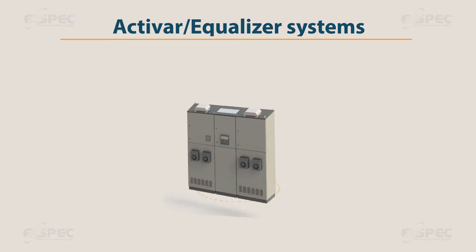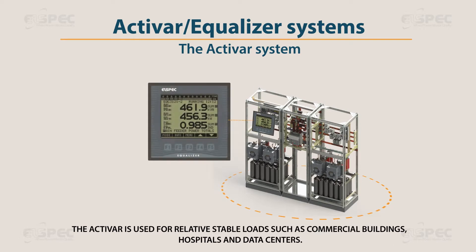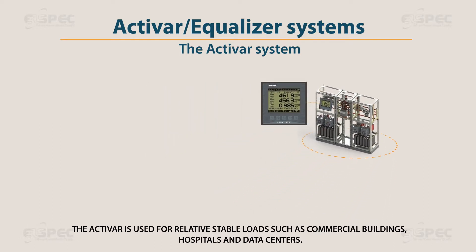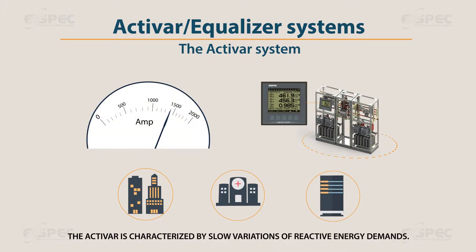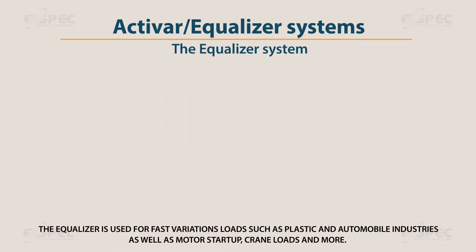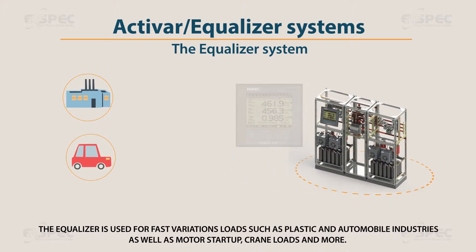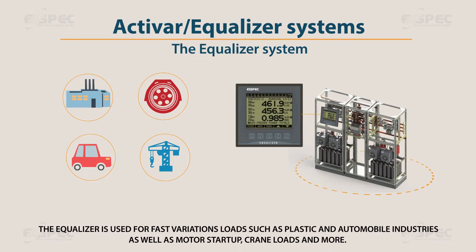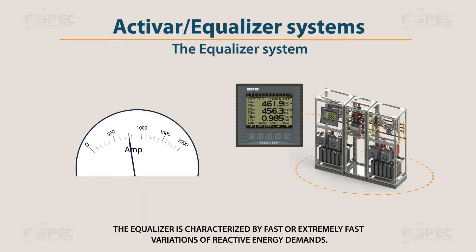The solution offered by L-Spec is the ACTIVAR equalizer systems based on thyristor-switched capacitors. The ACTIVAR is used for relatively stable loads such as commercial buildings, hospitals, and data centers, characterized by slow variations of reactive energy demands. The equalizer is used for fast variation loads such as plastic and automobile industries, as well as motor startup, cranes, and more, characterized by fast or extremely fast variations of reactive energy demands.